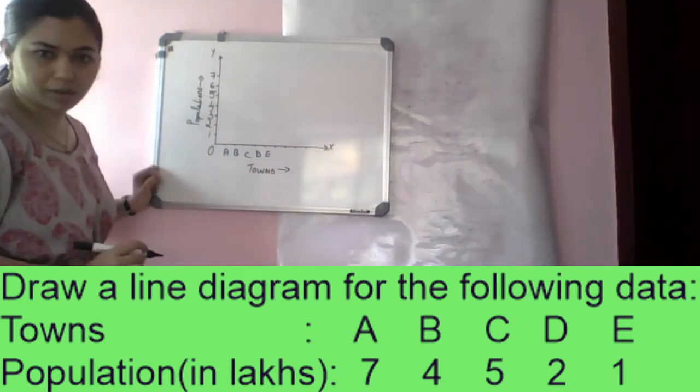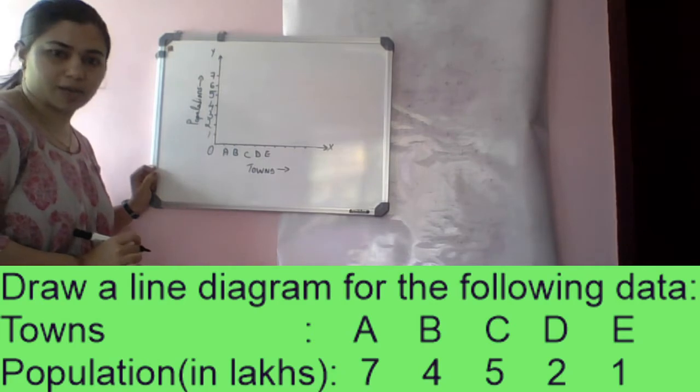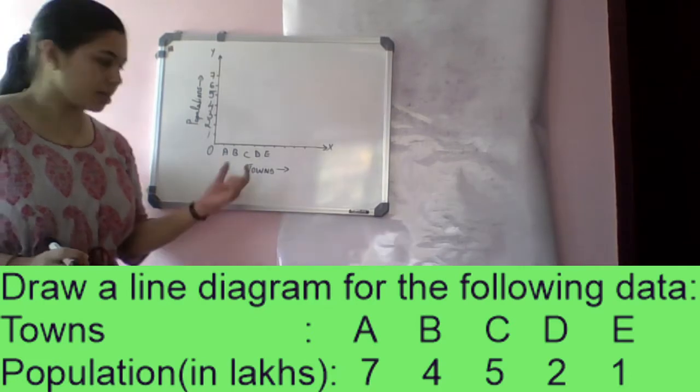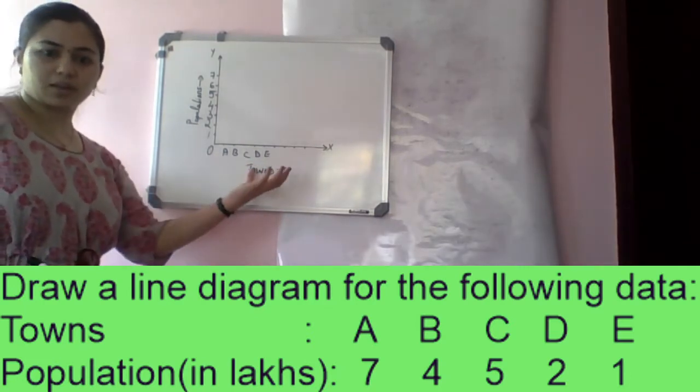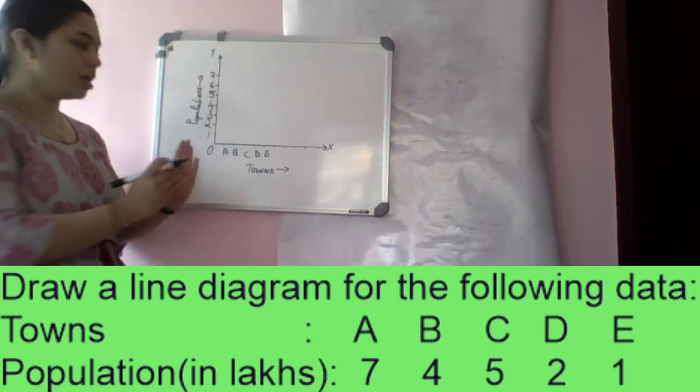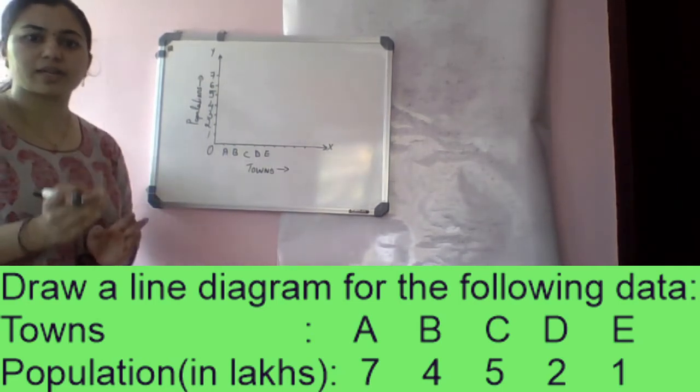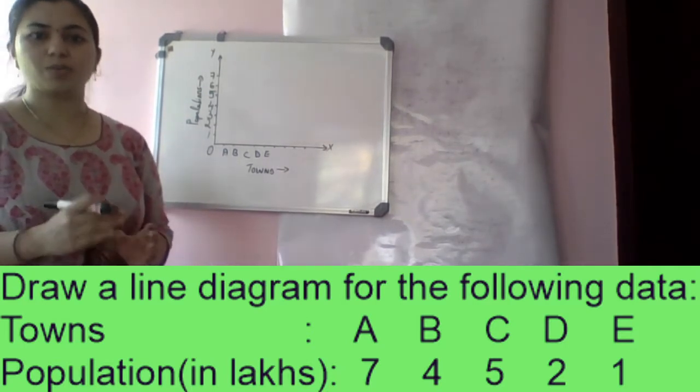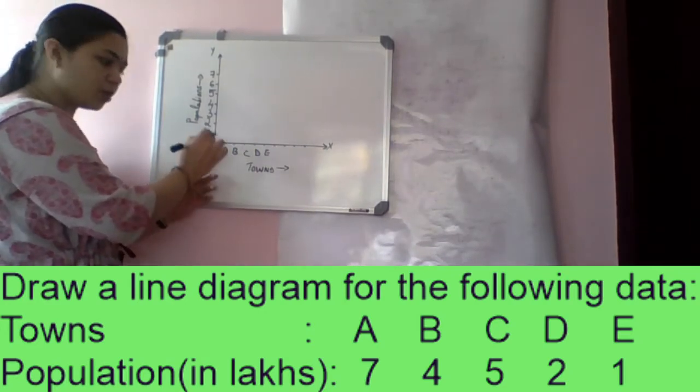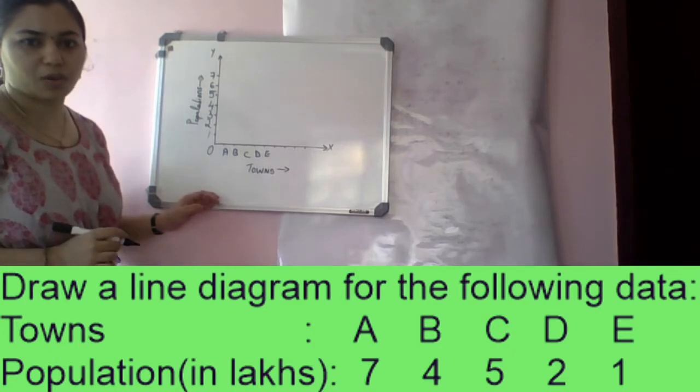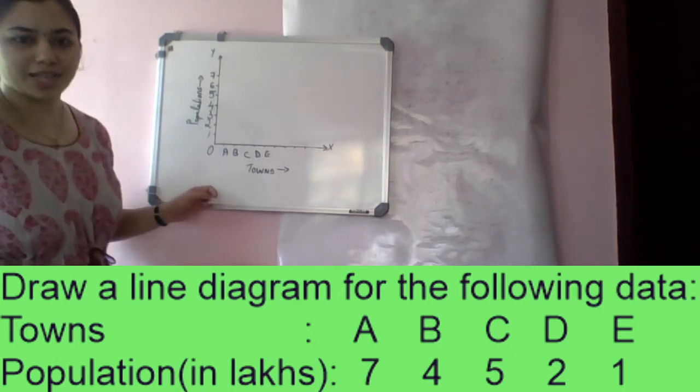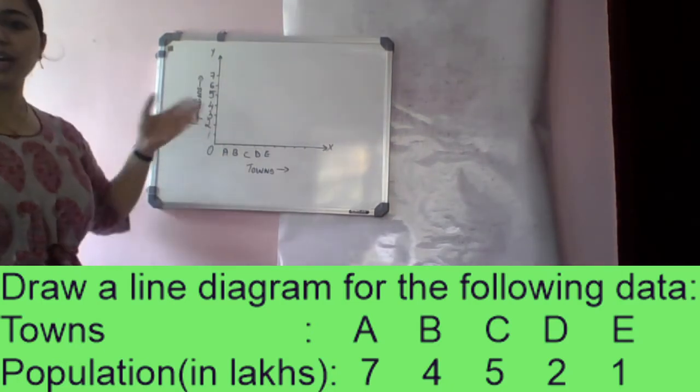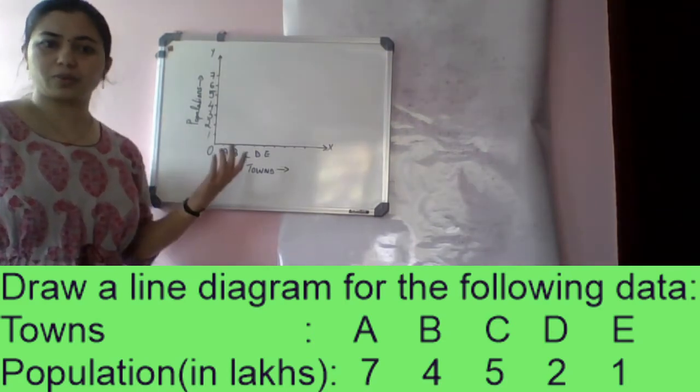Mark towns A, B, C, D, and E anywhere on the X axis at equal distances. You can use a scale of 1 cm or 2 cm distance, same equal distance. Population in lakhs goes on the Y axis. The numbers are 7, 4, 5, 2, 1, so we need 1, 2, 3 up to 7 on the scale.